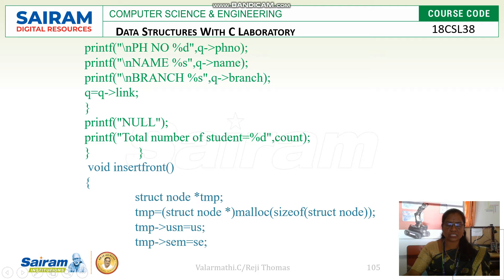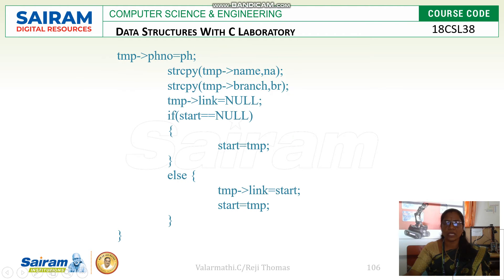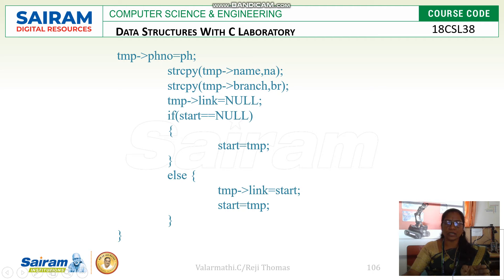For insertion of a new node at the front, we follow the same steps as creating a singly linked list. First, create a temporary node, allocate its size, then assign member variables: temp->USN equals US, temp->SEM equals SE, temp->phone equals PH, strcpy for name, and branch equals BR. If start equals null, this is the first node, so start equals temp. Otherwise, temp->link equals start, then start equals temp.